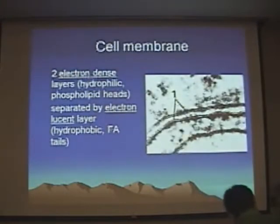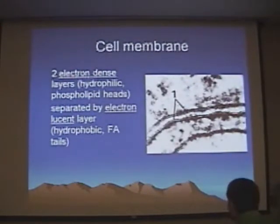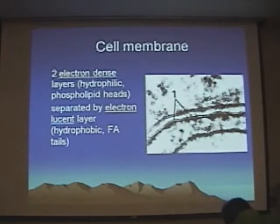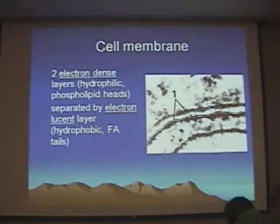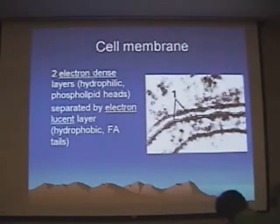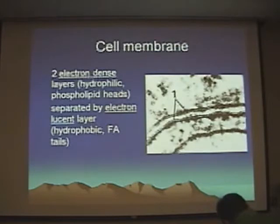When you align these molecules up in two separate rows, you end up with two electron-dense layers on the outside — those phospholipid heads — and one electrolucent layer in the middle — those fatty acid tails. So in the end, you see a dark layer, a light layer, and a dark layer. So it's trilaminar, three layers, despite the fact that it's only two molecules thick. It's because of that spatial arrangement of the polymers.